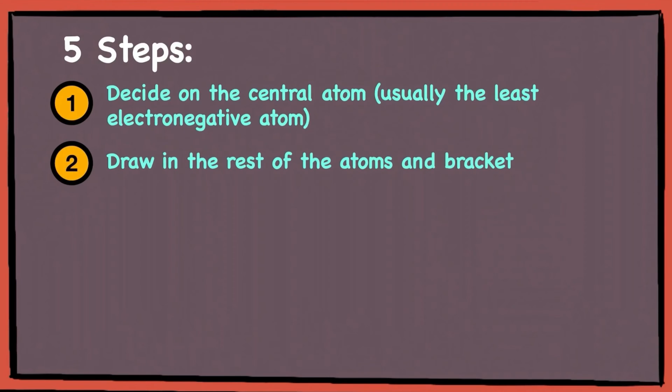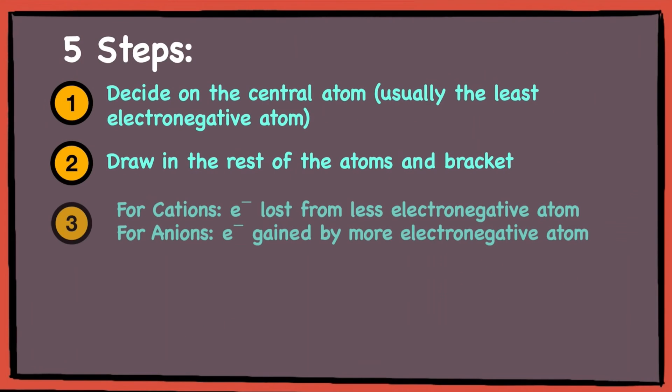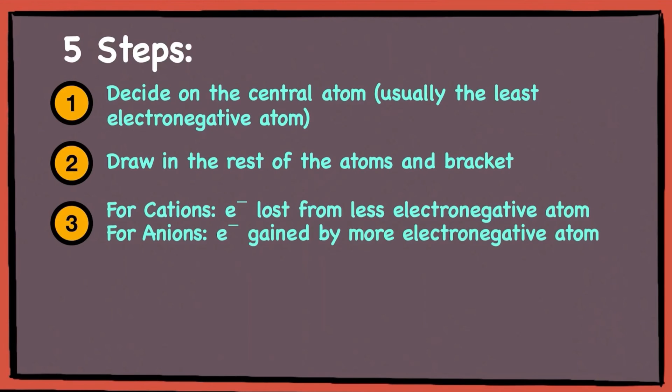Secondly, draw in the rest of the other atoms and the bracket. Next, depending if it's a cation or anion, note which atoms will gain or lose the electrons. The general rule is that for cations, electrons are lost from the less electronegative atom, while for anions, electrons are gained by the more electronegative atom.